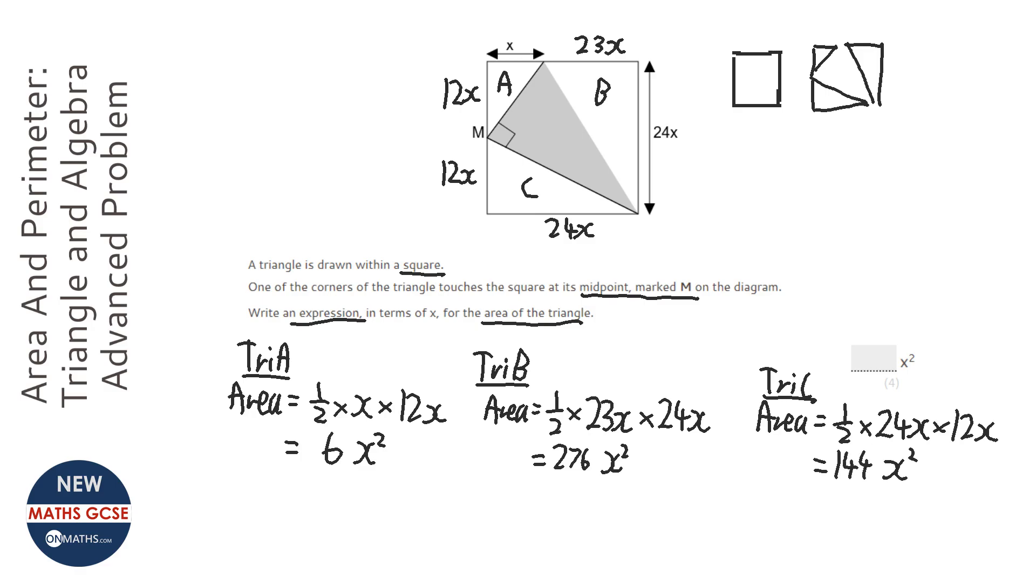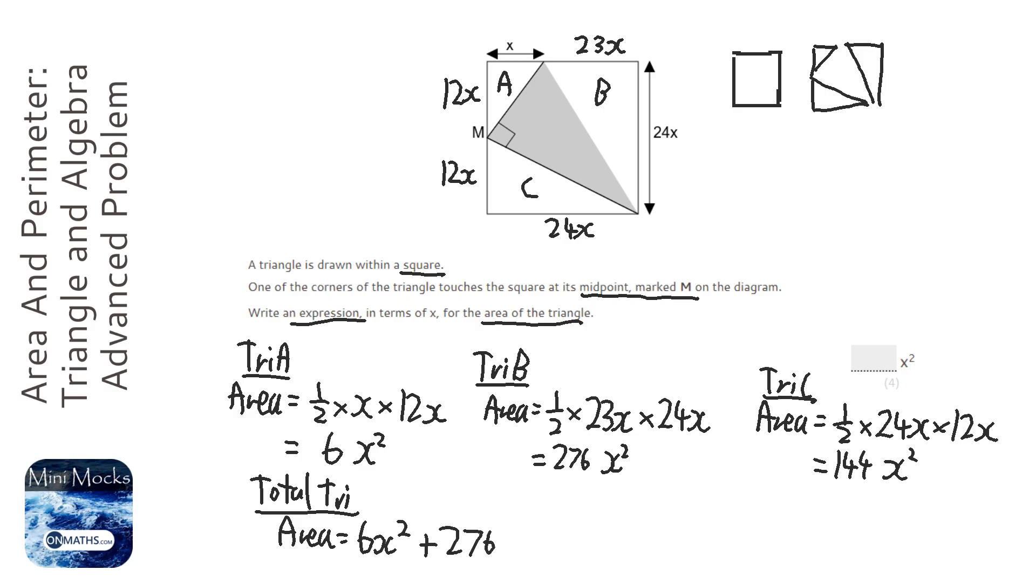So the total triangles is going to be 6x squared plus 276x squared plus 144x squared. So I'm going to add up all the bits we don't want, which is 426x squared. The bits we don't want is 426x squared.